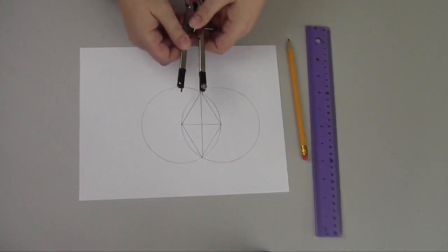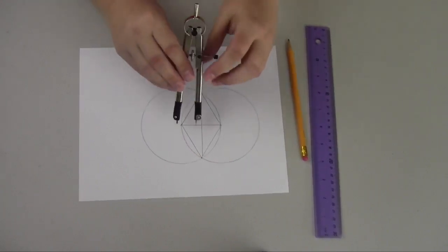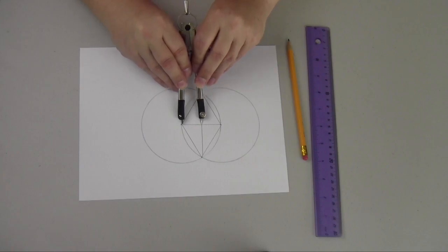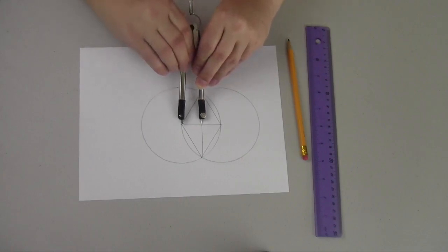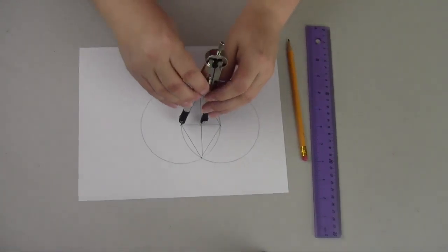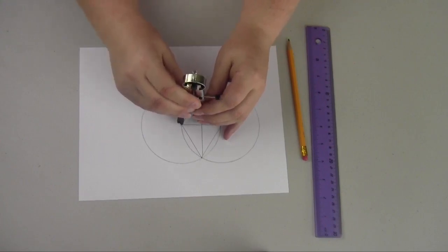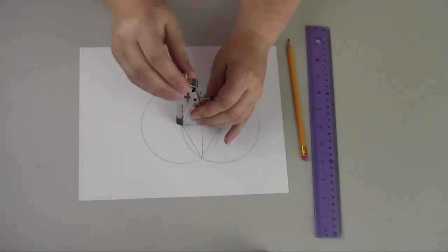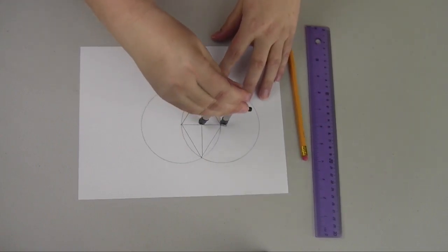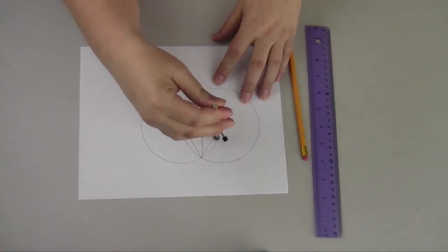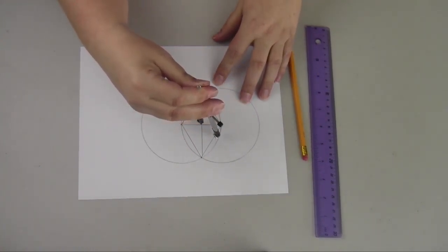I'm going to bring it down so that the radius is the same from here to here. I'm going to open it up just a little bit more. It has to be exactly even, and then when you're drawing your circle, you just draw another circle within this vesica Pisces.